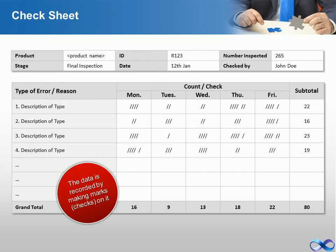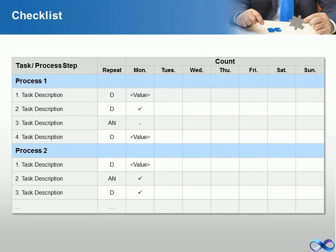The check sheet is a simple document that is used for collecting data in real time and at the location where the data is generated. The items to be performed for a task are listed in a checklist to indicate as complete when each is accomplished.